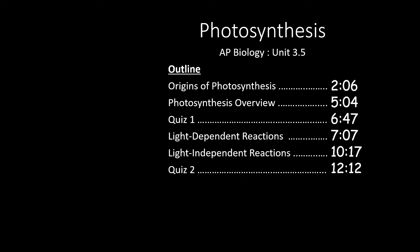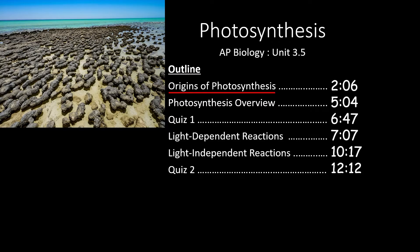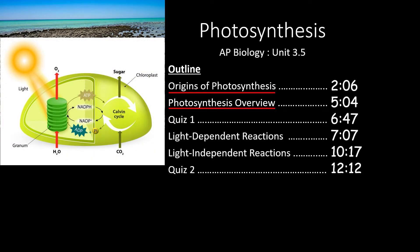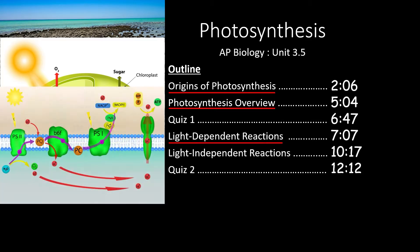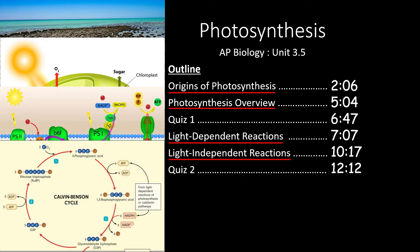In this video, we'll cover section 3.5 of the AP Biology Curriculum. We'll start by looking at the origins of photosynthesis and how this process changed the Earth's early atmosphere. Then we'll take a broad look at all the moving parts of photosynthesis and how they work together. After the first quiz, we'll take a closer look at the light-dependent reactions in the thylakoid membrane, then the light-independent reactions of the Calvin cycle.